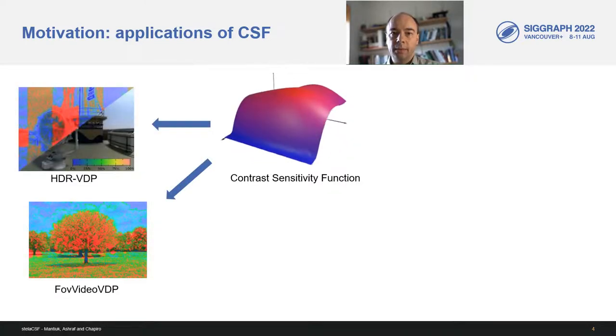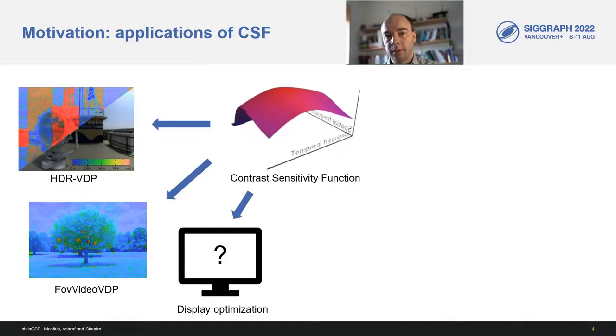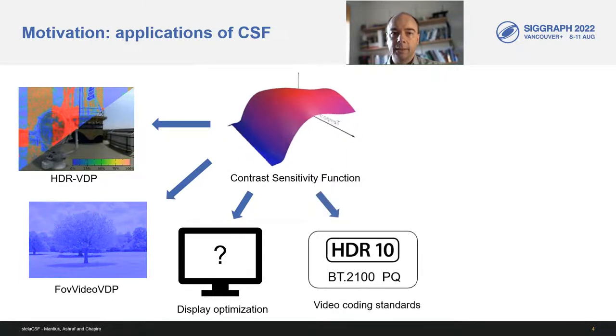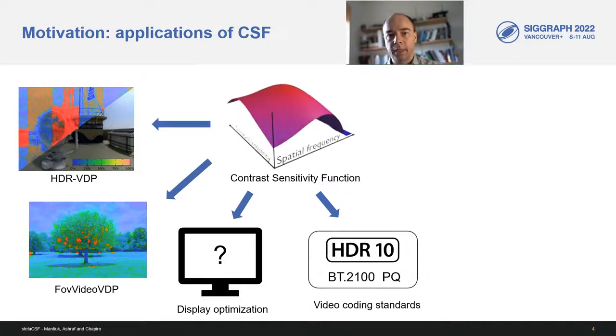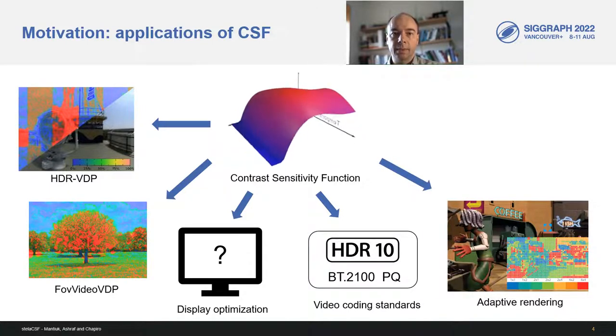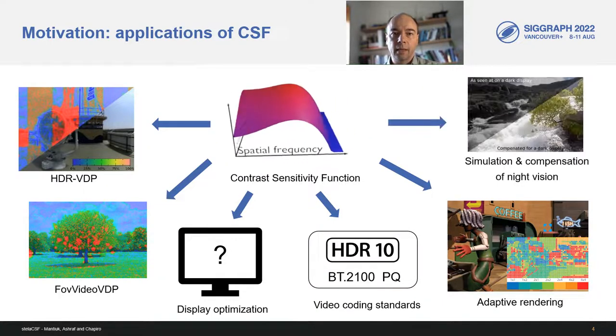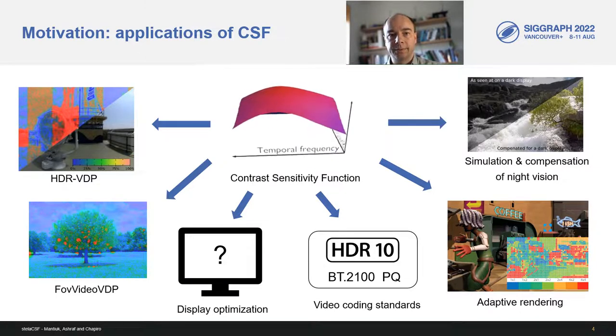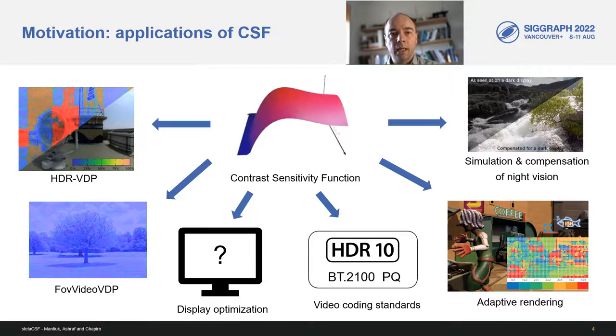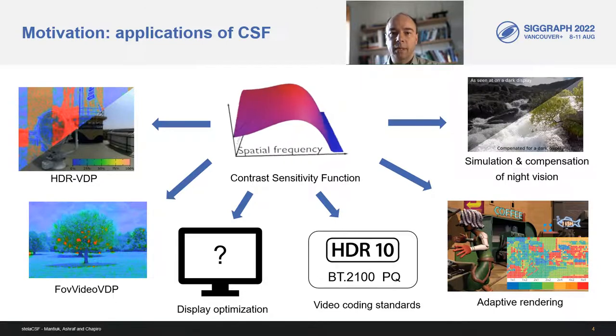The CSF is used in image and video metrics to adapt to different viewing distances or frame rates. It's used to optimize display design, uniformity, resolution, and dynamic range. CSF is behind many video encoding standards, such as the PQ transfer function used for HDR content. At SIGGRAPH Asia last year, we showed how CSF can be used to adaptively select refresh rate and shading resolution in real-time rendering. We also used CSF to optimize images for displays of different brightness. Algorithms based on CSF are already deployed in millions of devices, so it's quite important to have a reliable CSF model.